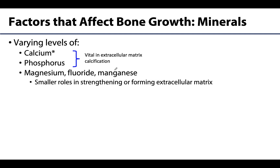Let's begin our discussion of factors that affect bone growth with the all-important minerals. Minerals are vital in extracellular matrix calcification — that organic material needs those minerals to calcify or harden in order to have a robust hard bone. In particular, calcium is the key one, but phosphorus also plays a role. Other minerals such as magnesium, fluoride, and manganese play smaller roles in strengthening and forming the extracellular matrix.